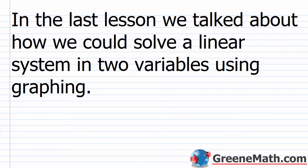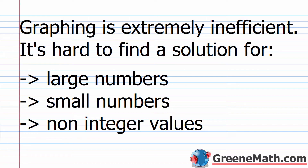In the last lesson, we talked about how we could solve a linear system in two variables using graphing. At the point of intersection, we had an ordered pair that was on both lines, so it was a solution to both equations of the system. But there are some big problems with graphing — it's extremely inefficient and extremely hard to find a solution.